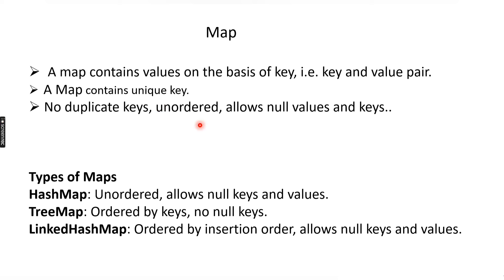Map is unordered. We know that List is an ordered collection, and LinkedHashSet is also ordered, but the Map interface is unordered. This means we will not get the elements in the same order in which we added them. Map also allows null keys and null values.